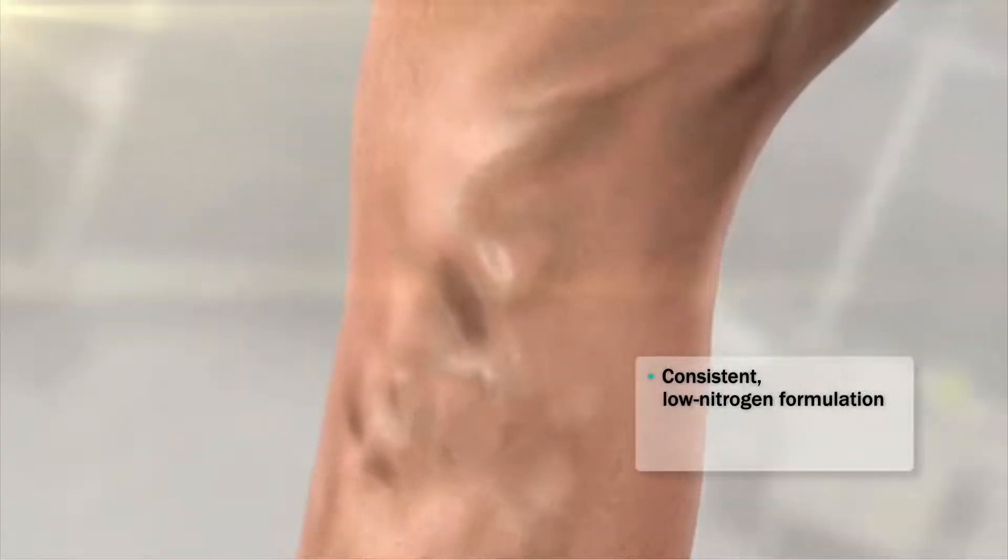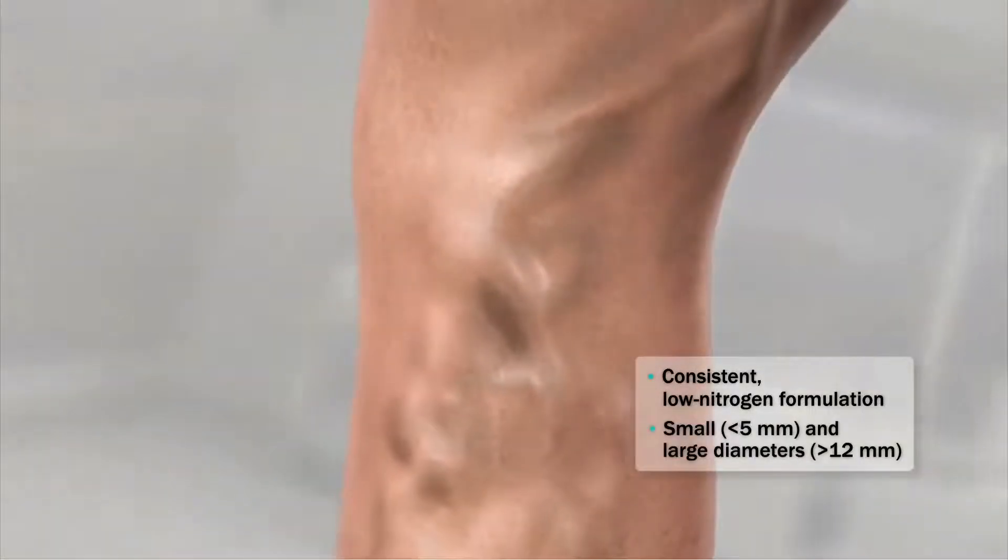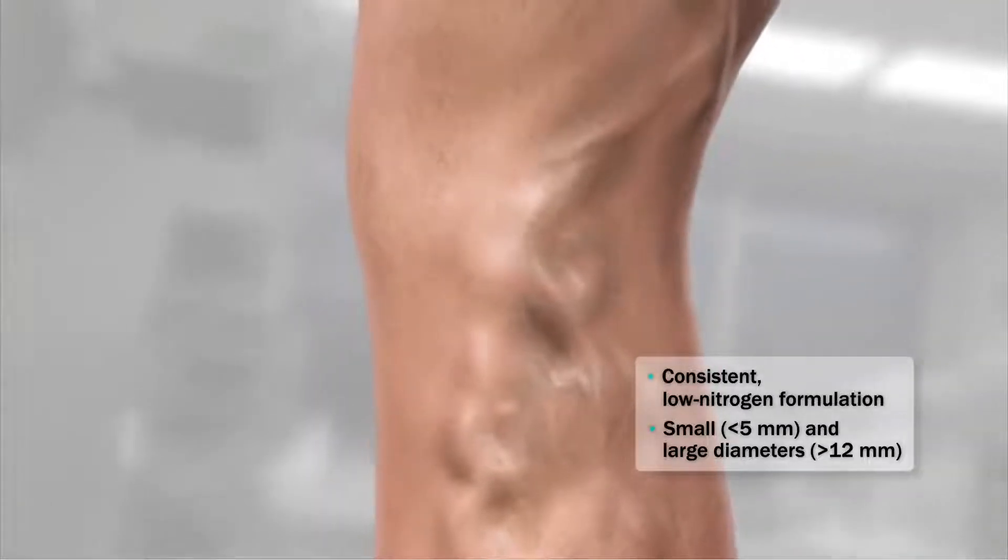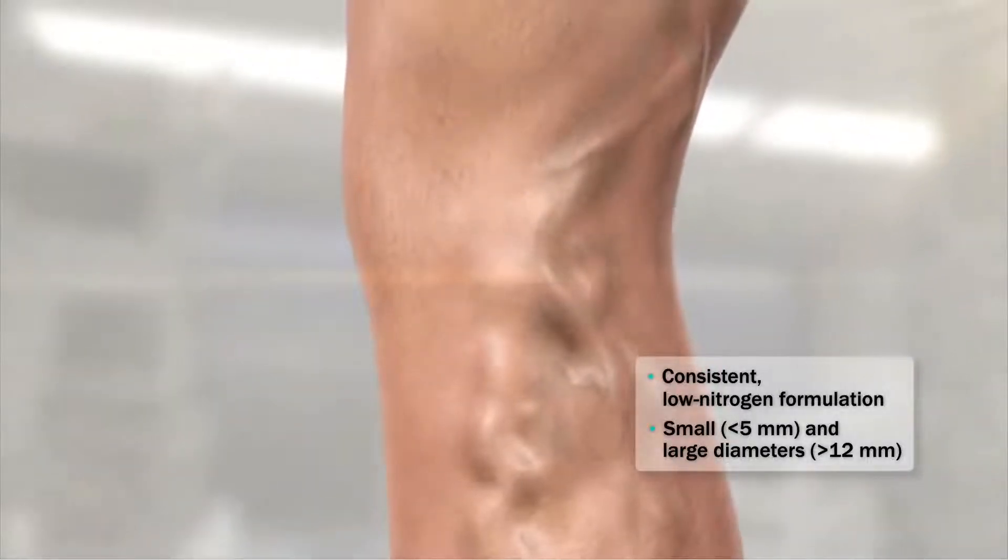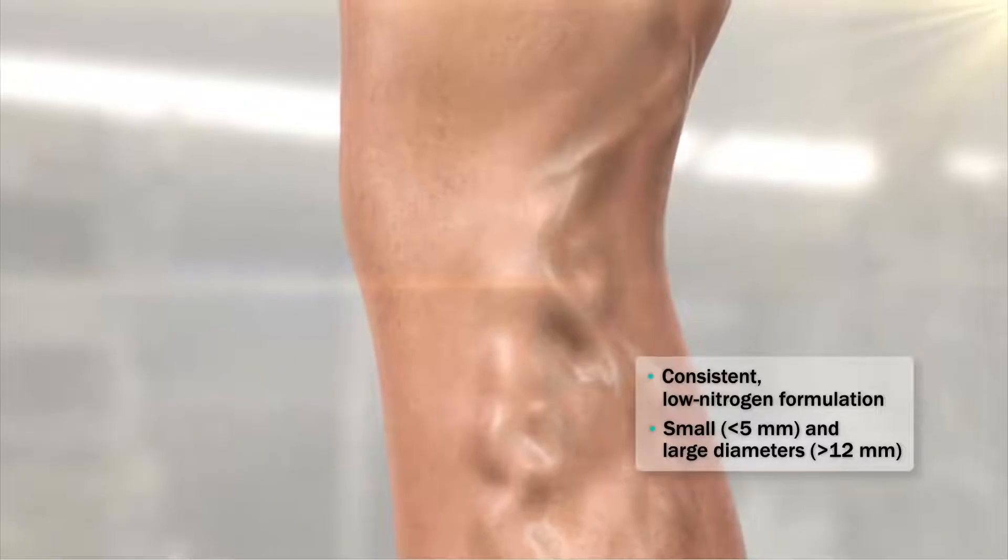Varathena has a consistent low nitrogen formulation for reliable results over a wide range of vein diameters, including large veins greater than 12 millimeters and tortuous and recurrent veins that may not be treatable with other modalities.